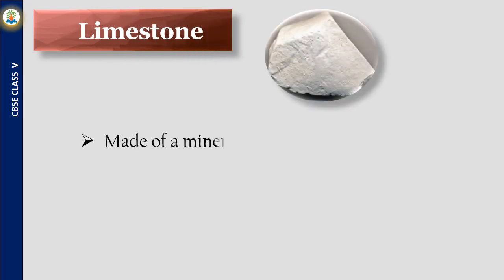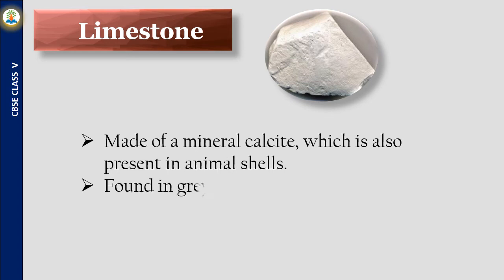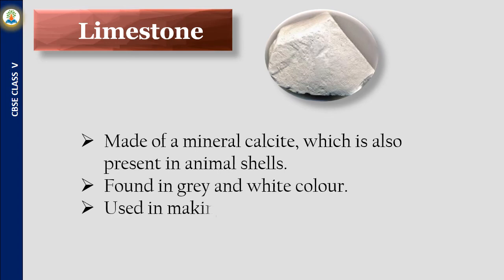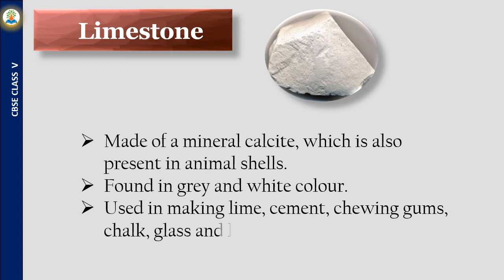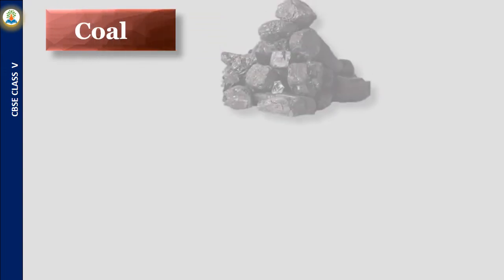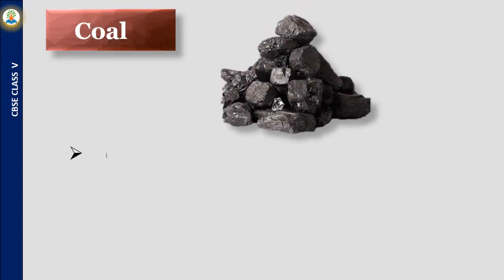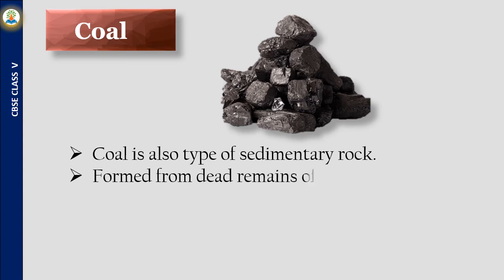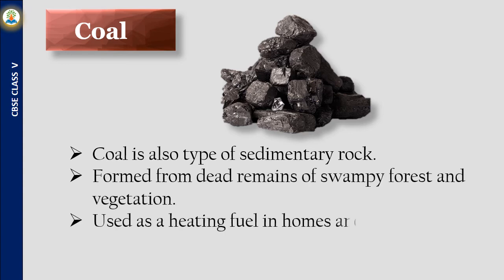Limestone is made of the mineral calcite, which is also present in animal shells. It is found in gray and white color, used in making lime, cement, chewing gums, chalk, glass, and linoleum. Coal is also a type of sedimentary rock, formed from dead remains of swampy forests and vegetation, and is used as a heating fuel in homes and thermal power plants.